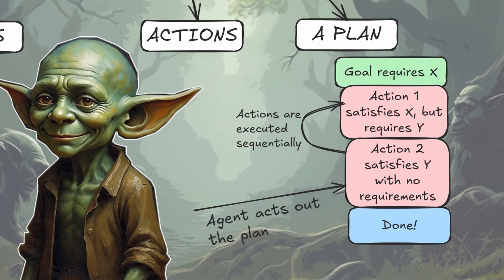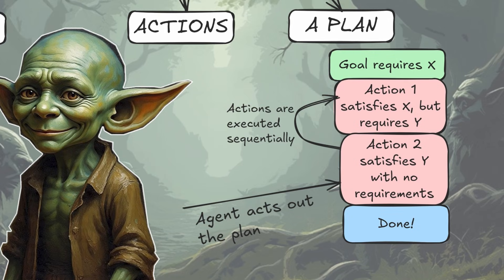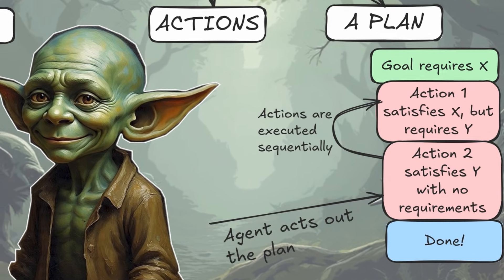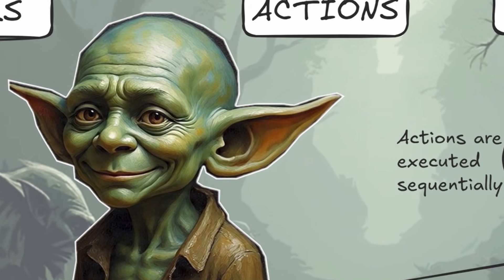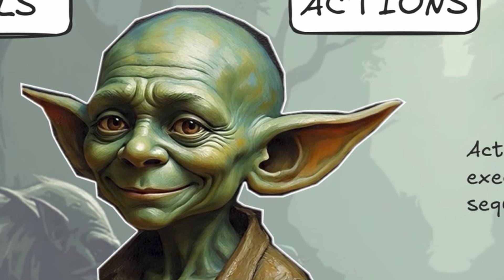Once the plan is made, the agent carries out the plan by executing each action sequentially. We plan in reverse, but we execute the actions in the forward pass. So first we do action 2; given that action 2 is finished, Y should now be true, so we can do action 1. After action 1, X is true, and we've satisfied our goal that required X.